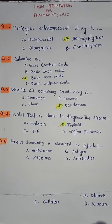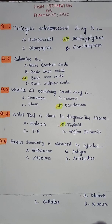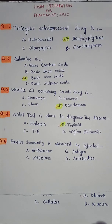Please like, comment and share the video and subscribe the channel. Question number one: tricyclic antidepressant drug is — option A haliperidol, option B amitriptyline, option C olanzapine, option D escitalopram. So correct answer is option B amitriptyline.